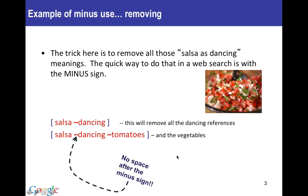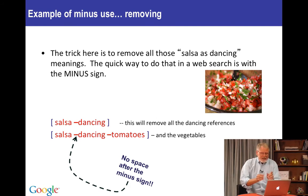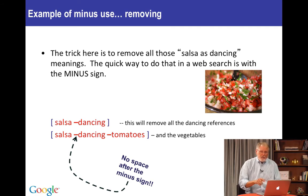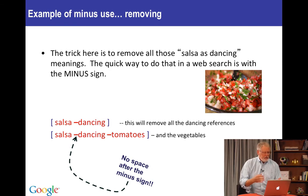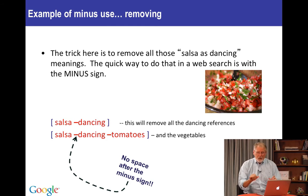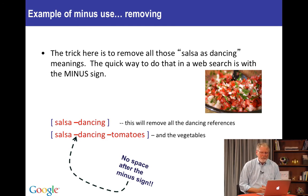One thing to notice is that you cannot have a space after the minus sign. So: 'salsa minus dancing minus tomatoes' — no space. If you put a space between the minus and the word you want to exclude, what you'll end up doing is emphasizing that word. So if you do 'salsa, minus [space] dancing', you'll get a lot of salsa dancing results, and that's probably not what you want.